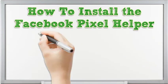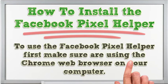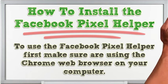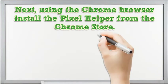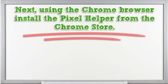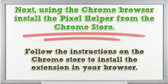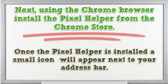How to install the Facebook Pixel Helper. To use the Facebook Pixel Helper, first make sure you are using the Chrome web browser on your computer. Next, using the Chrome browser, install the Pixel Helper from the Chrome store. Follow the instructions on the Chrome store to install the extension in your browser. Once the Pixel Helper is installed, a small icon will appear next to your address bar.